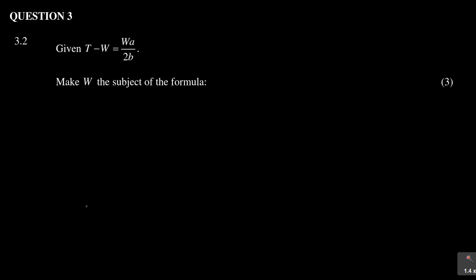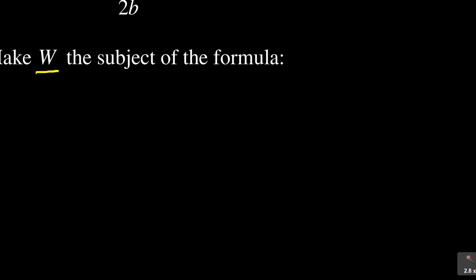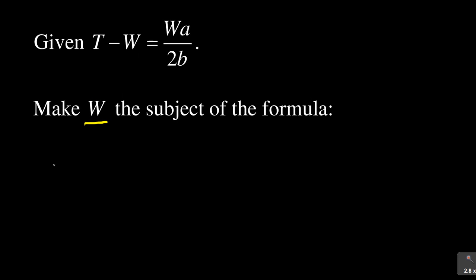Let us look at question 3.2. The question is out of three marks. We are given t minus w equals w times a over 2b, and it says make w the subject. So we are looking at the subject of the formula. It is a common question and you need to always understand the subject of the formula — it is a very important part.